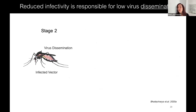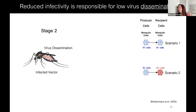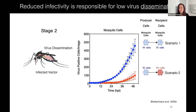What about stage two, where the virus has to go from one infected mosquito cell to an uninfected neighboring cell? We compare virus reared in Wolbachia-free cells replicating in a Wolbachia-free cell versus a Wolbachia-infected recipient cell. Again, we see the same type of pathogen blocking — Wolbachia infection in recipient cells limits virus replication, and we see fewer virus-positive cells per image over time.